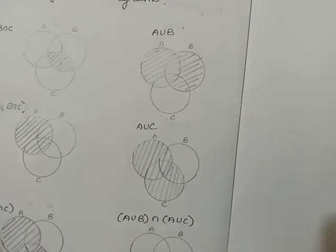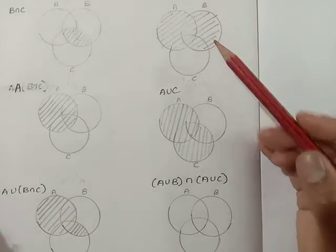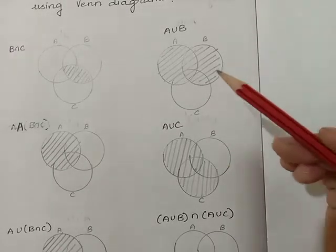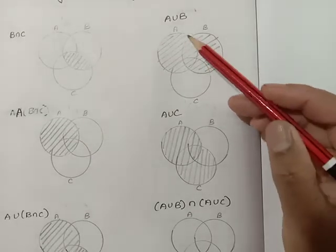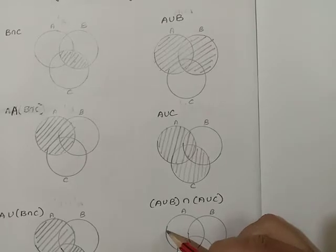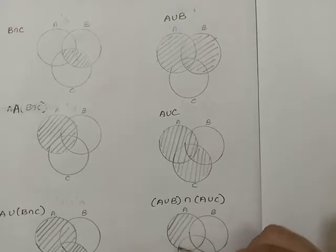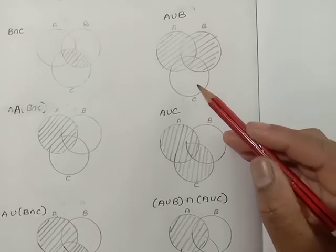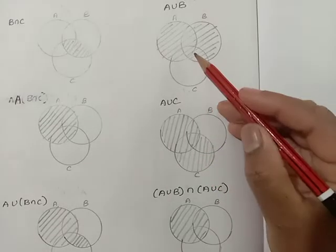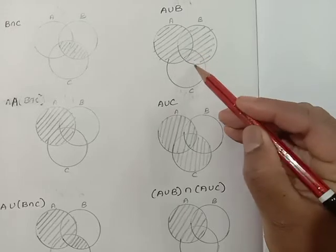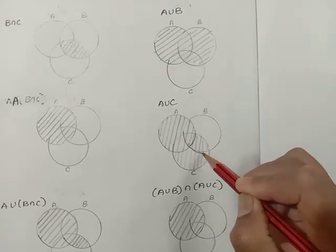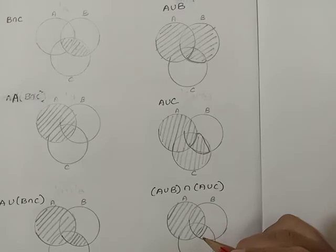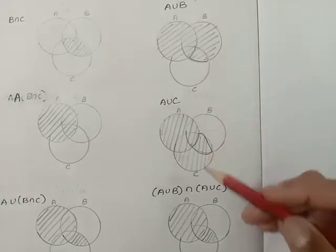Now, A union B intersection A union C. We have to compare the two diagrams and find what is common and circle those things. In this diagram A is covered; here also A is covered, so we cover A first. Here B is covered but it is not covered there — we don't want it. Here C is not covered but C is covered there — we don't want it. This portion is covered in both diagrams, so we find what is common and cover that portion.